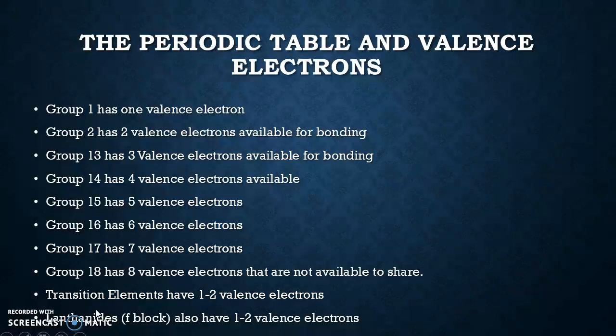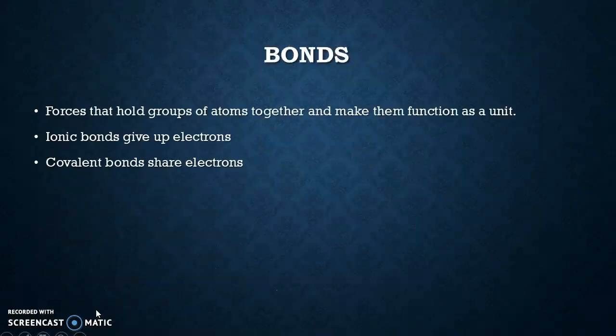Transition elements — that section right in the middle — have one to two valence electrons; it depends on which element we're talking about. The F-block at the bottom, the lanthanides — that little piece that comes off the bottom of your periodic table — also have one to two valence electrons, and it varies depending on which element it is.